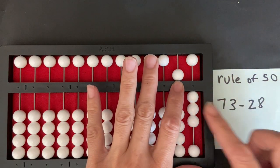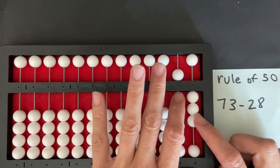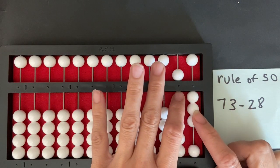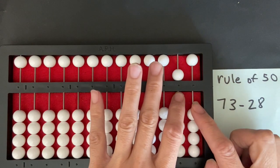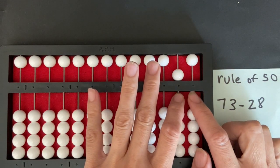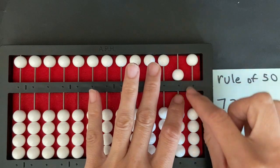Now I need to subtract 8 from the units bar. So I'm going to start by pushing away the beads from the counting bar: 1, 2, 3. Oh, I'm out of beads in the units rod.